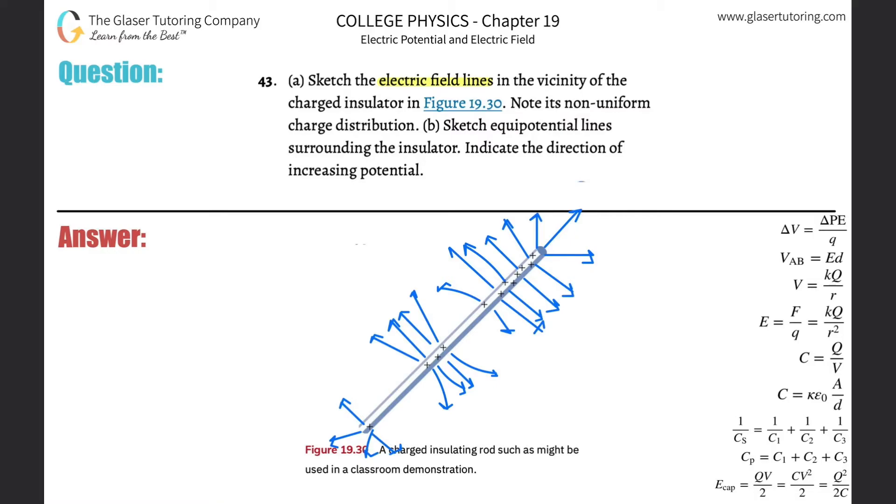Alright, and that's that. Letter B: sketch the equipotential lines surrounding the insulator. So remember the equipotential lines have to be perpendicular to each of these electric field lines.